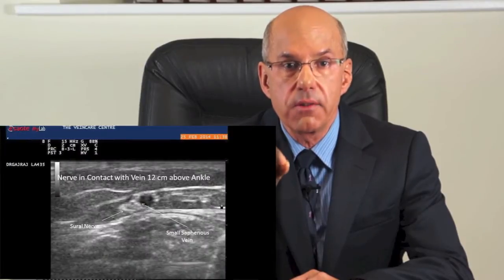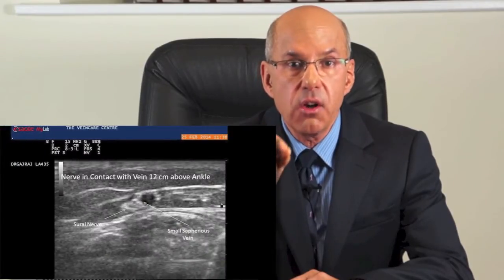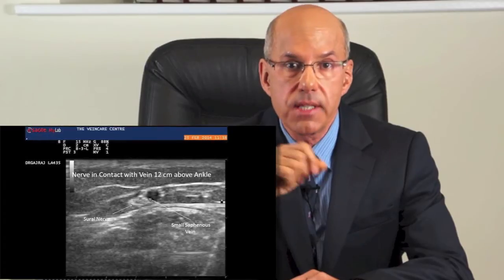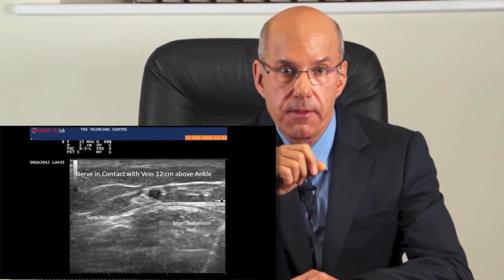In my opinion, the sural nerve should be visualized in transverse section and its relationship to the vein established at the proposed point of vein cannulation. Here you can see that the vein and the nerve are very close and in contact in the distal calf, here at 12 cm above the malleoli.